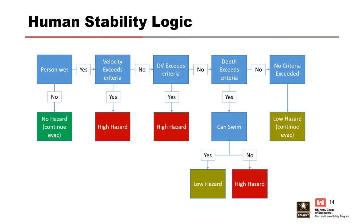How does this logic function in LifeSim? First we ask: does a person get wet? If no, no hazard. If yes, we ask: has their velocity threshold been exceeded? If so, they are put in the high hazard zone. If not, we look at depth times velocity — if that's surpassed, they go in high hazard. If not, we look at depth alone. If depth is exceeded, we ask: can they swim? If they cannot swim, they're considered high hazard. If they can swim, they're considered low hazard. If depth is not exceeded, they're in the low hazard zone.